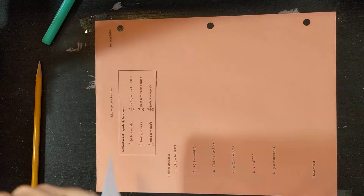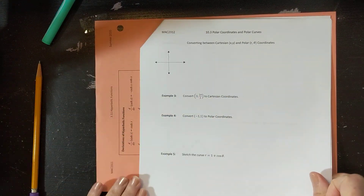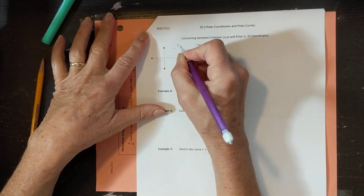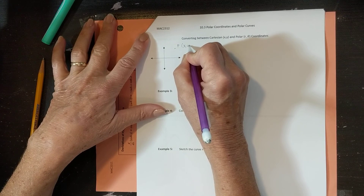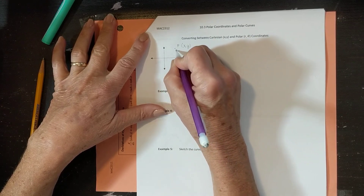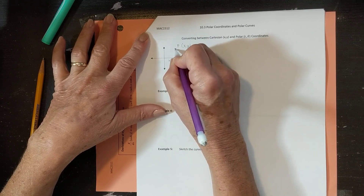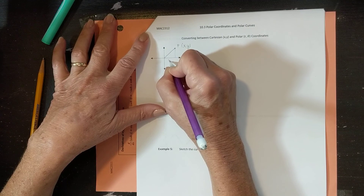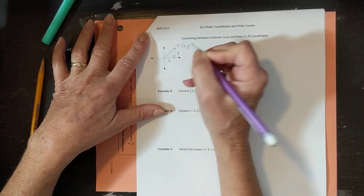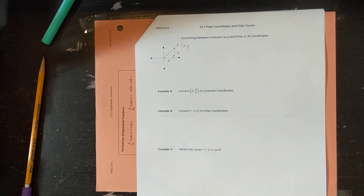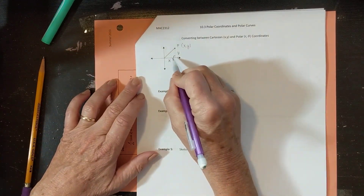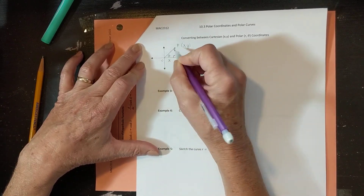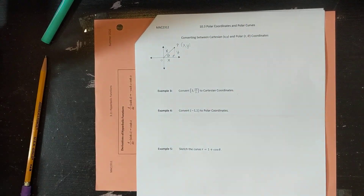Now that we know how to plot things, let's talk about converting between Cartesian and polar coordinates. Consider point P in the plane with x-y coordinates. From the origin, x is the horizontal distance and y is the vertical distance, forming a right triangle. Overlaying polar coordinates, this is our pole and polar axis, the angle theta is the rotation, and R is the distance from the pole to P.